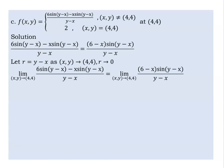The expression is 6 minus x times sin(y minus x) over (y minus x), and the limit is around (4,4). The absolute value of sin(y minus x) equals sin(r), where r equals y minus x. The expression becomes sin(r) over r, and x approaches (4,4) as r approaches zero.